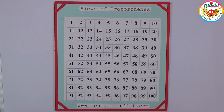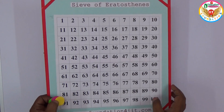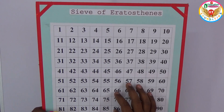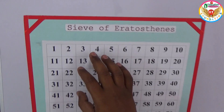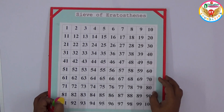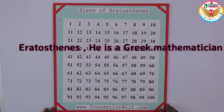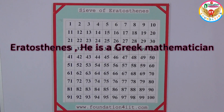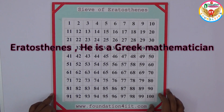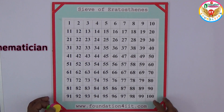Welcome to our educational channel. In this video I will show the project based on prime numbers. This is the Sieve of Eratosthenes — he is a great mathematician who invented this concept to find the prime numbers between 1 to 100.